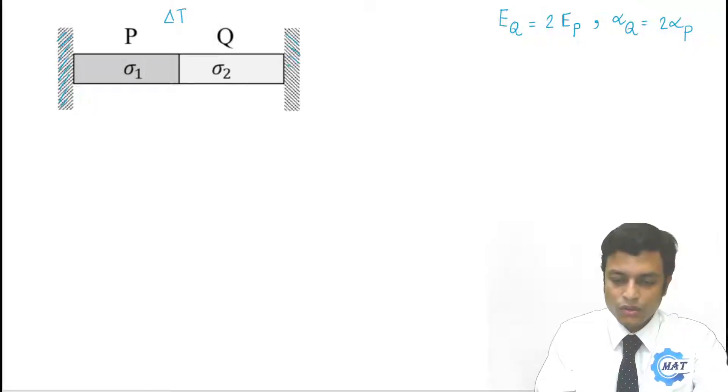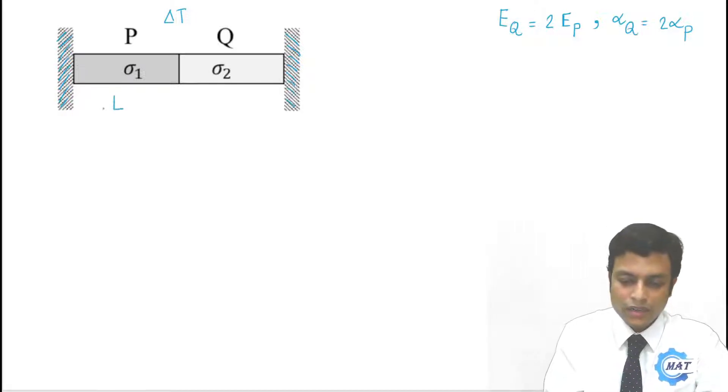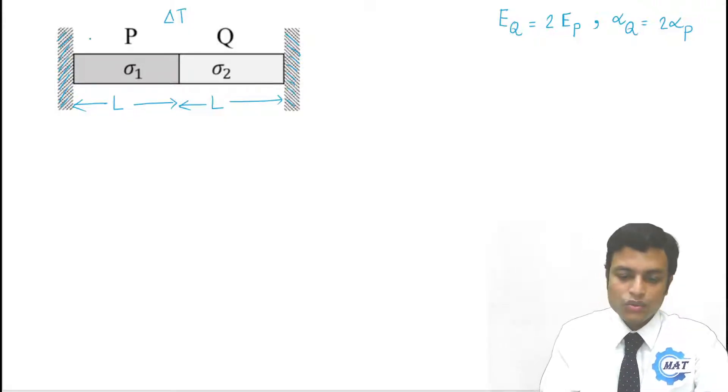The resultant length of P and Q will be unchanged. That is, the final length of the combination of P and Q will be also 2L if they have same length L. But at elevated temperature they will elongate, but these two supports do not allow them to elongate. By which? By providing compressive forces.